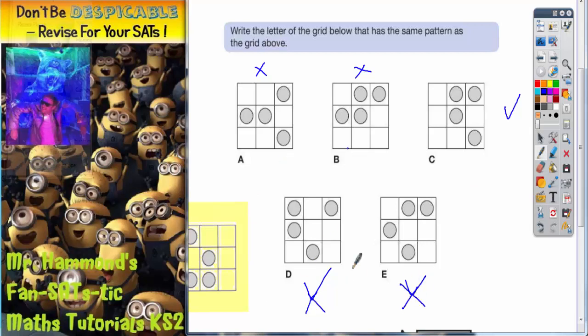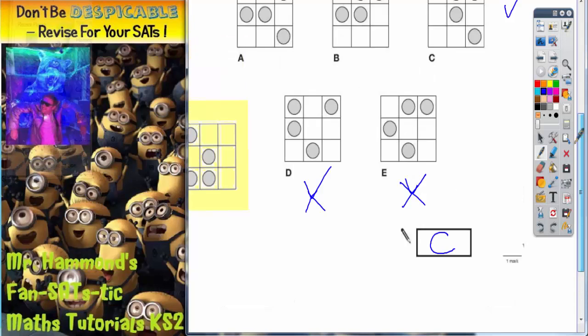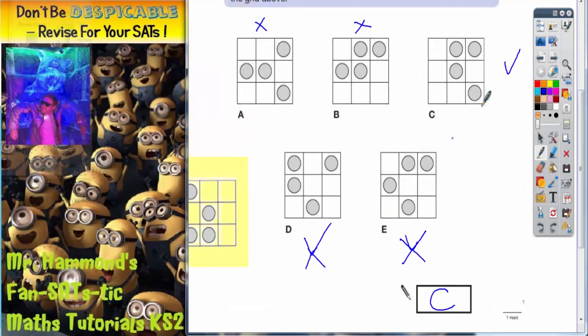So A, B, D and E don't work, but shape C does. So C is the letter that we need to write in there. And there we have it.